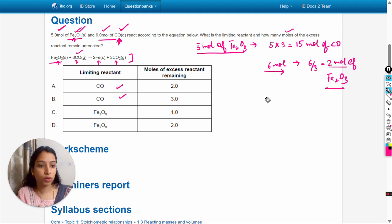So the excess amount is 5 minus 2, which will actually be used in the reaction. So the remaining amount is 3 moles. So the excess amount that remains unreacted is 3 moles. So the answer should be B option.